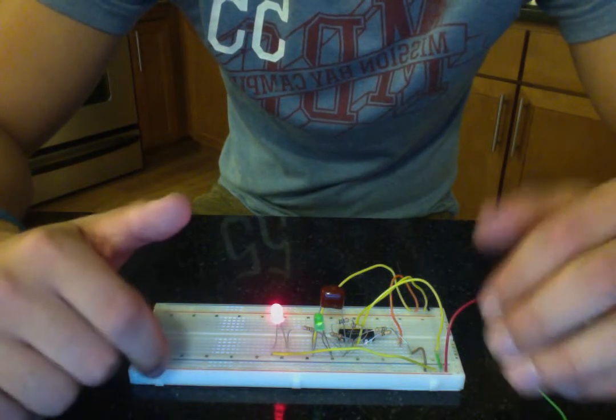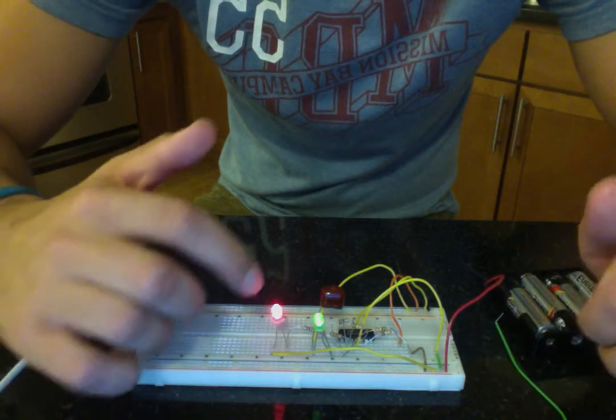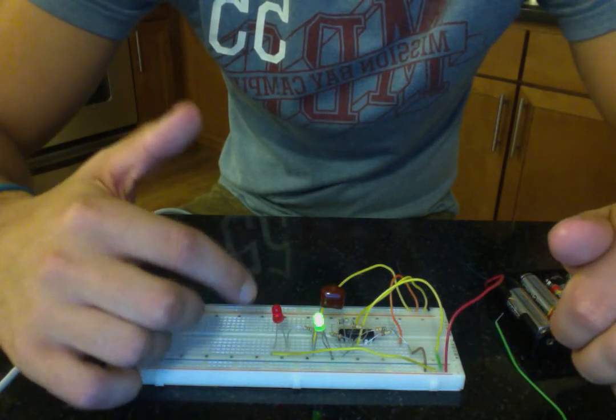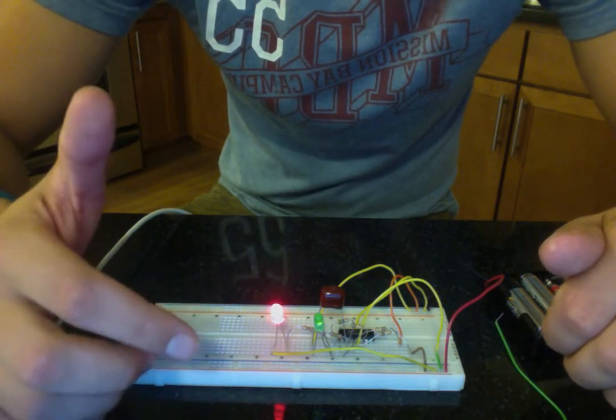That's why the green lights up first. Then as the capacitor starts to discharge, current flows into the red LED, so that one lights up. Then it charges up again and goes to the green, then back to the red. That's basically how it works.